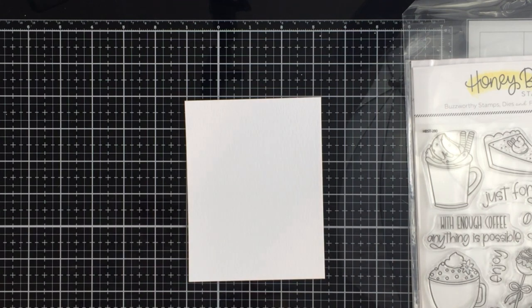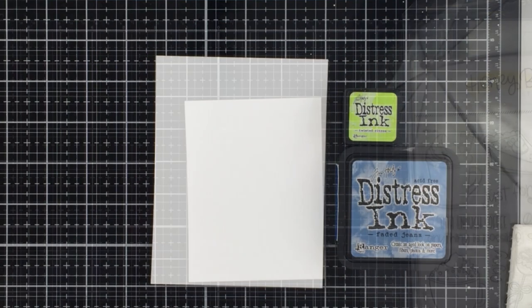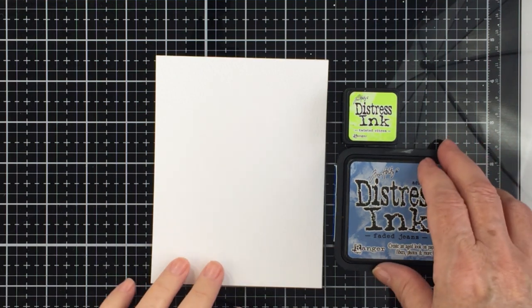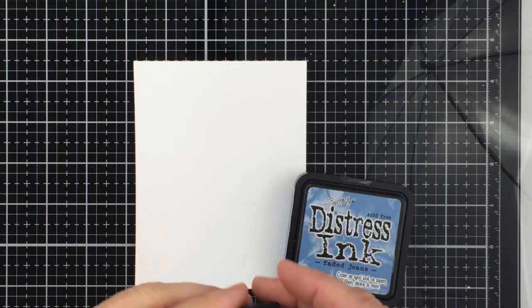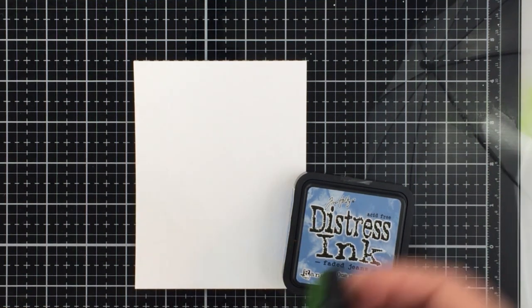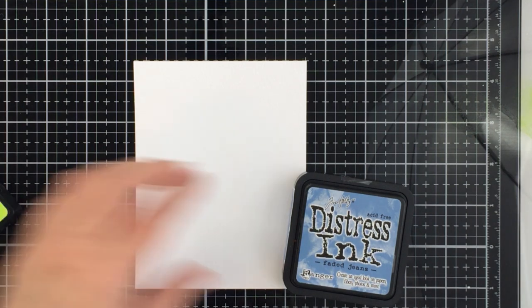So I'm going to be working on this Tim Holtz Ranger watercolor cardstock, and I'm going to be using some distress inks as well to create my watercolor background. So I'm going to use some twisted citron and some faded jeans to create this background. This color scheme is one of my favorite color schemes. My favorite color is blue, and I think my favorite color of distress is faded jeans. I love it. And so I'm going to just put that ink down on my glass mat and add some water to it with my water spritzer.